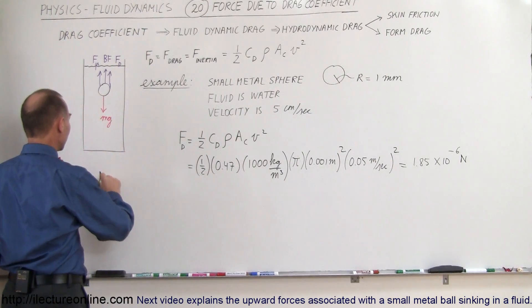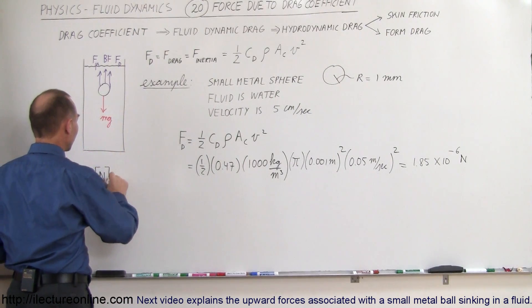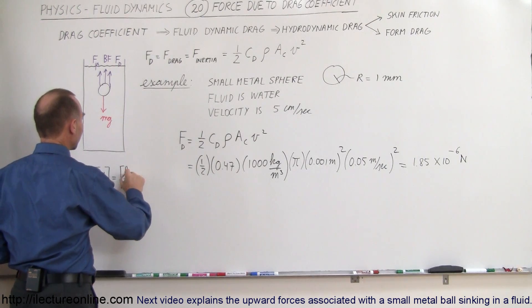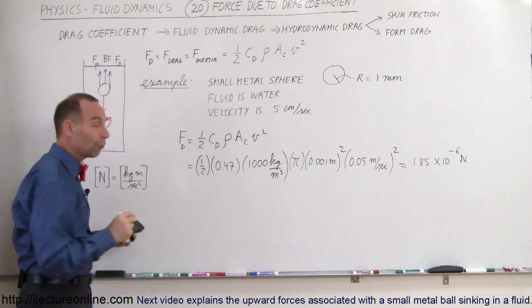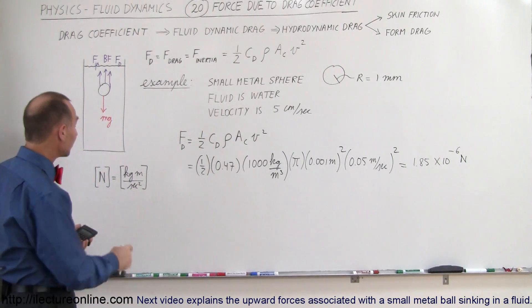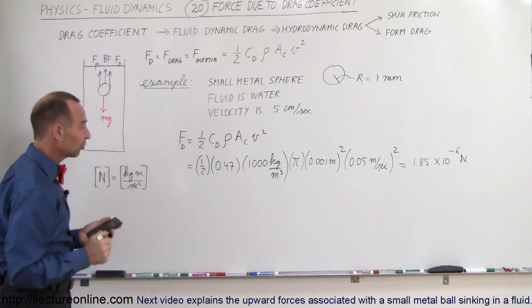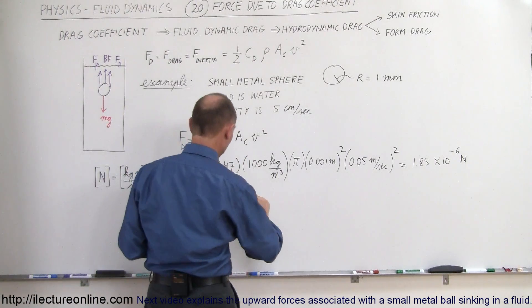Remember, a newton, if you look at the units, that's equal to a kilogram times meters per second squared. So it's the force that gives a mass of 1 kilogram, the acceleration of 1 meter per second squared. So let's see what we get for units here.